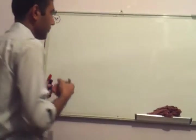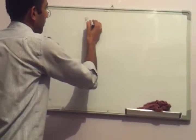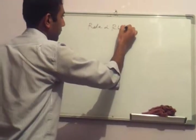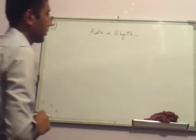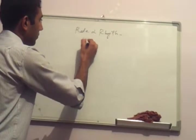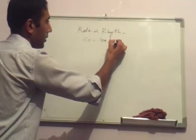Rate and rhythm disorders. What is the normal rate? 60 to 100 beats per minute.